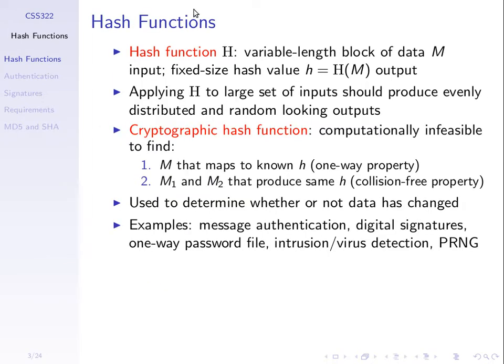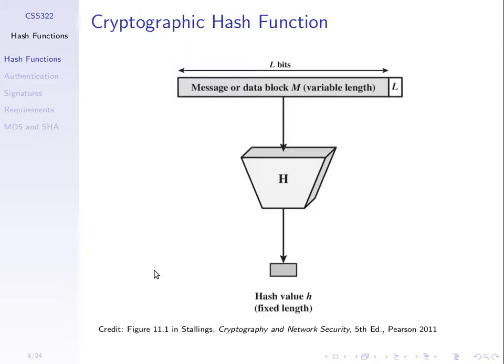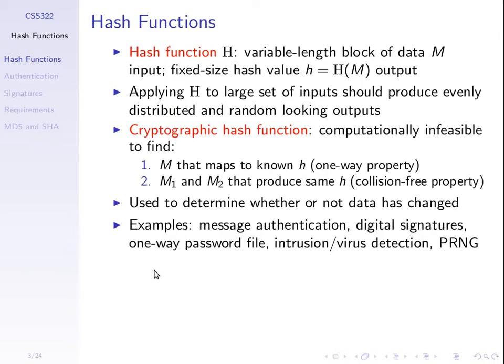We introduced the concepts of hash functions and now want to look at how we can use them to authenticate. We'll start with a set of examples. So far we've said for a cryptographic hash function we need the one-way property: you can hash a message and get the hash value easily, but to take just the hash value and find the original message should be hard — practically impossible.